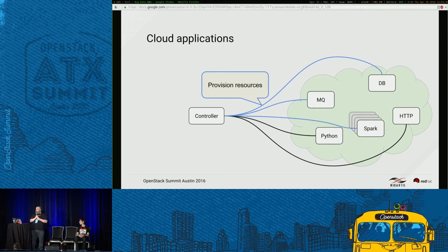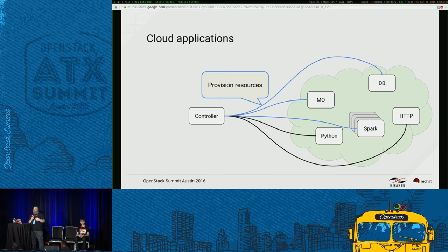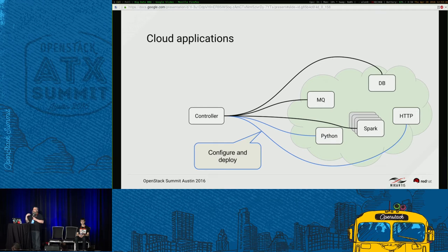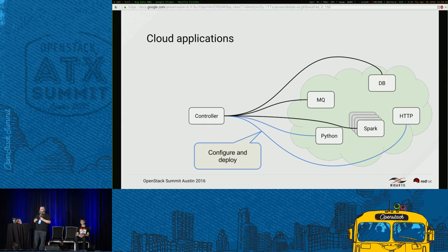When I talk about controller applications, I usually have an application that lives on my desktop or in a cloud node to perform operations. One of the big operations is provisioning resources that your data applications can then consume. The controller might spawn a message queue, create a database, and spawn the Spark cluster. Then it will configure and deploy the applications that run against those provisioned resources.